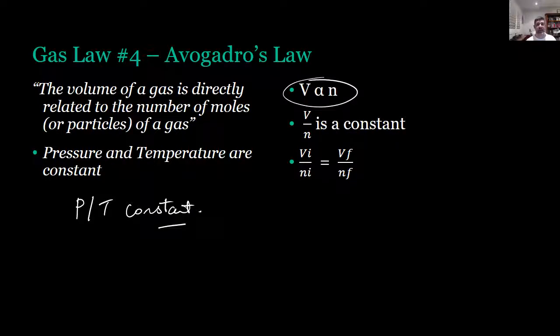And therefore, again, the quotient rule applies: V over n is a constant, and V over n initial conditions is equivalent to V over n final conditions. This just gives you a little bit of context for some of the work that we do in looking at stoichiometry related to the gas laws.